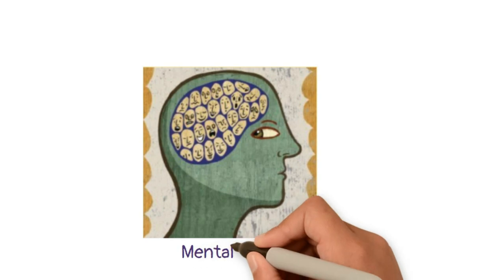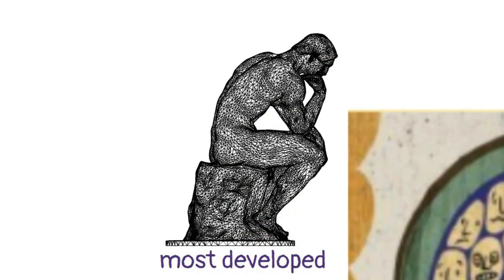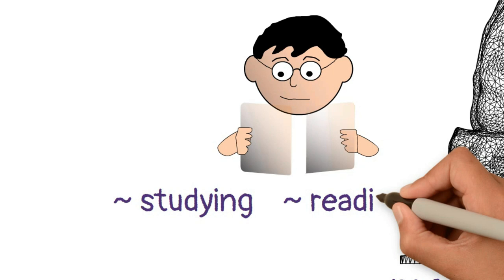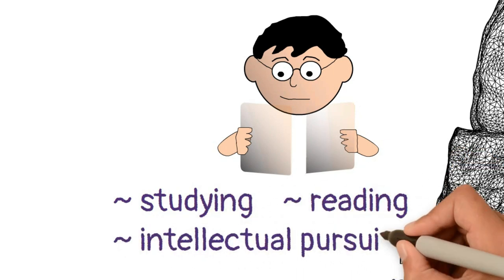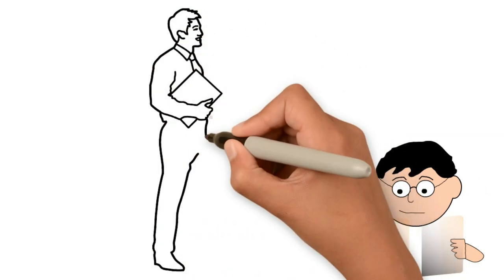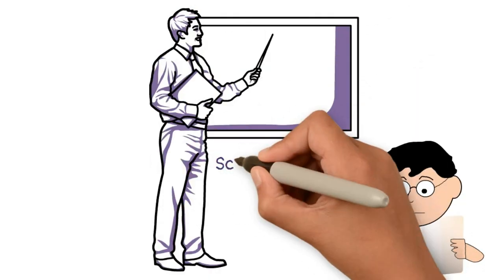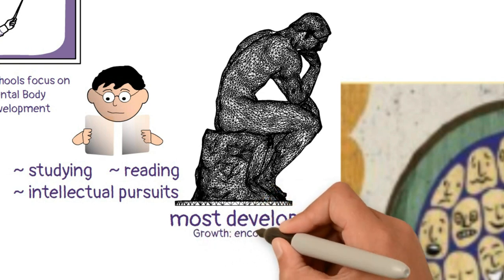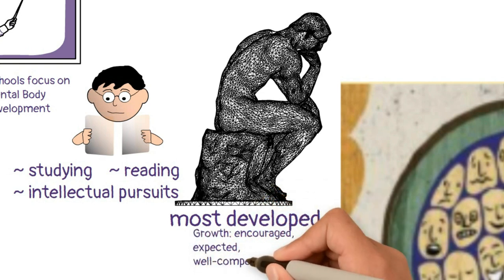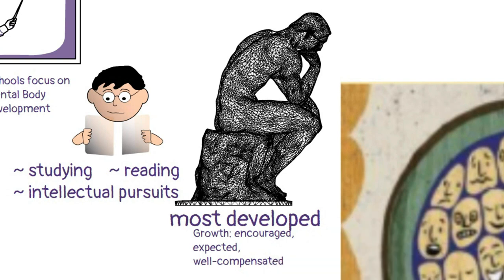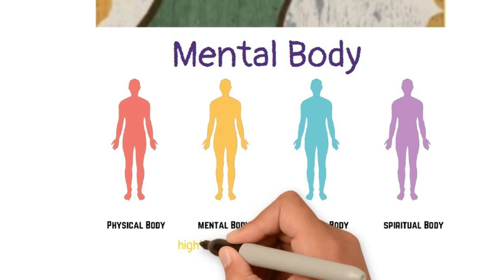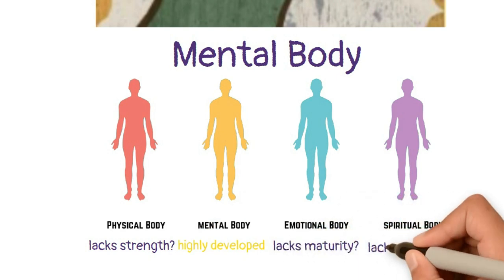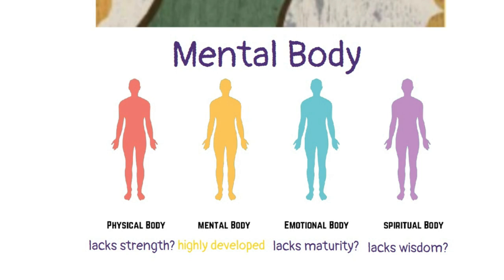The next body is the mental body, and it's usually the most developed of all the bodies. This is the body that enables us to acquire new knowledge through reading, studying, and intellectual explorations and pursuits. Our schools and colleges often focus specifically on development of the mental body, almost at the expense of other bodies. In our culture today, this mental body's development is expected, encouraged, and well compensated. But to have a highly developed mental body without a healthy physical body, a mature emotional body, and a wise spiritual body means we will not have holistic growth and development.